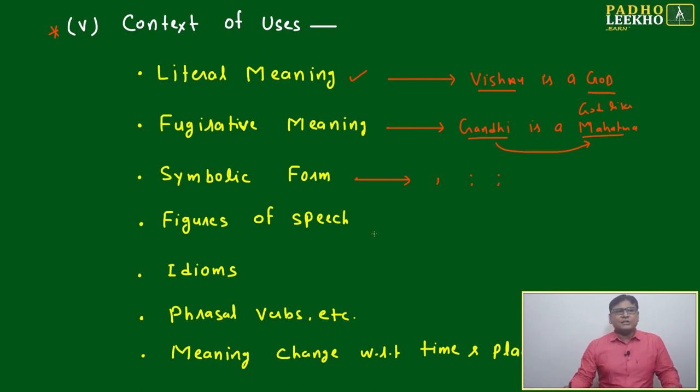Many times we will use context of usage in the form of symbols, conjunction, interjections. These are notation, symbolical. Figures of speech, this is again most important from literary point of view. Figures of speech are too much important and generally we are not exposed much.